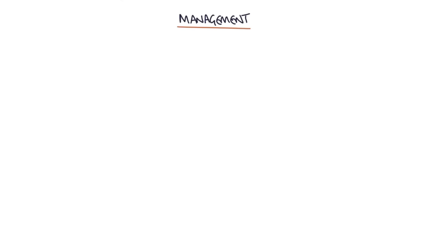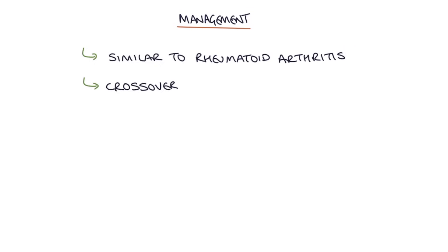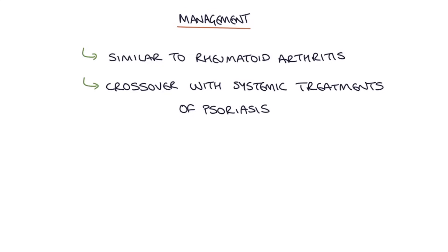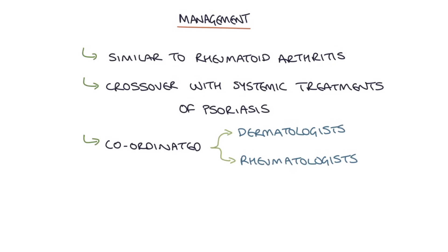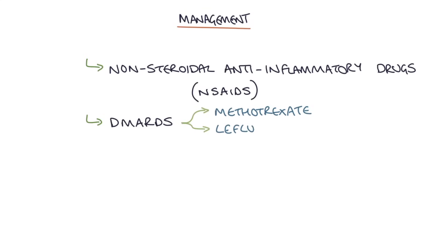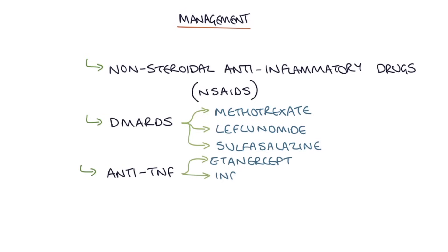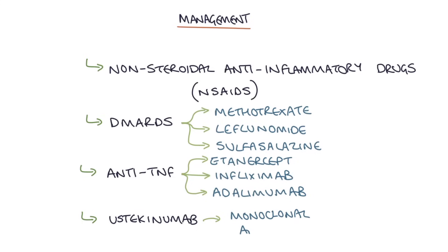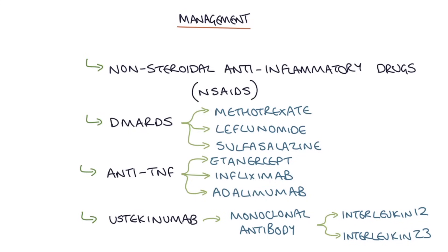Management of psoriatic arthritis is similar to rheumatoid arthritis, and there is crossover between the systemic treatments of psoriasis and psoriatic arthritis, so treatment is often coordinated between dermatologists and rheumatologists. Depending on severity, patients may require simple NSAIDs for pain, or DMARDs such as methotrexate, leflunomide, or sulfasalazine. They can also be treated with anti-TNF medications like etanercept, infliximab, or adalimumab. The last line is ustekinumab, a monoclonal antibody targeting interleukin-12 and interleukin-23, which dampens down inflammation.